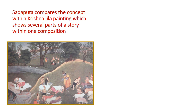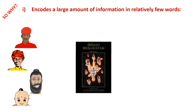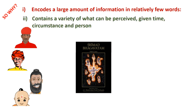Sadaputadas compares the concept with the Krishna Leela painting, which shows several parts of a story within one composition. Here's a more modern illustration of the same principle. Why do this? It encodes a large amount of information in relatively few words, and it contains a variety of what can be perceived given time, circumstance, and person.